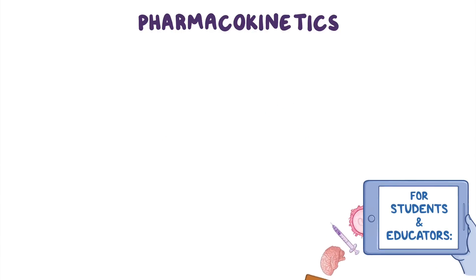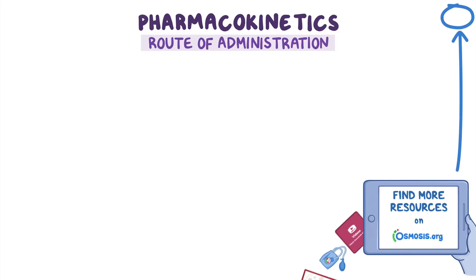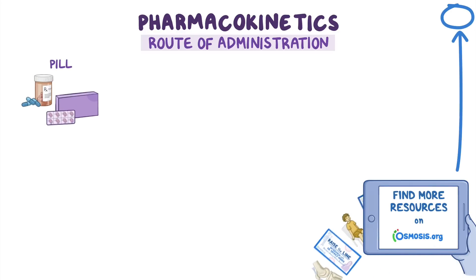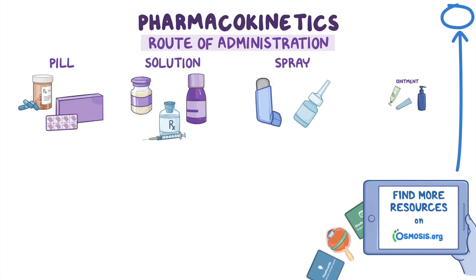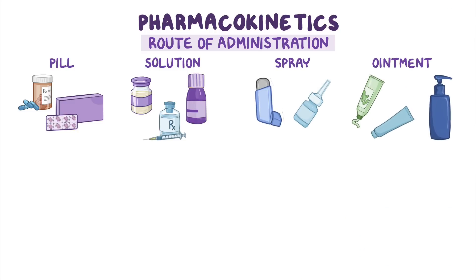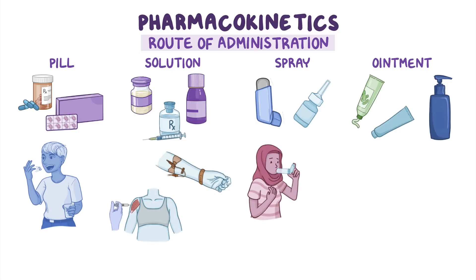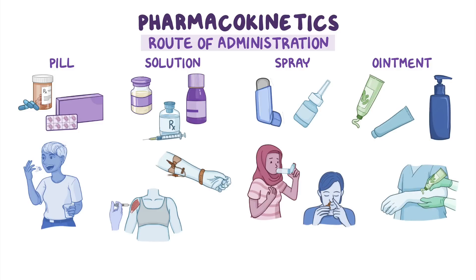A medication needs a way to be administered, or a route of administration. Depending on the form of the chemical preparation, like a pill, solution, spray, or ointment, and the part of the body being treated, the medication can be administered through various means or routes, such as swallowed by the mouth or orally, injected into a vein or intravenously, injected into a muscle or intramuscularly, inhaled into the lungs, sprayed into the nose or nasally, and applied onto the skin or cutaneously.